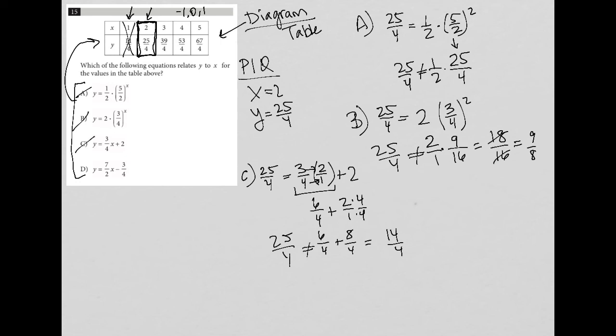So D hopefully is the right answer. Otherwise, we made a math error on one of these and have to go back and check it out. But let's try D and see what happens. D would be 25 over 4 equals 7 over 2 times, again, I'm going to call it 2 over 1 minus 3 over 4. Multiplying straight across, I'd have 14 over 2 minus 3 over 4.